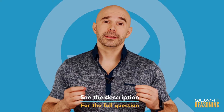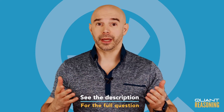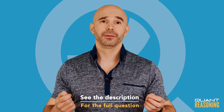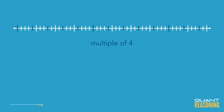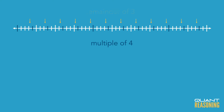For this question, I think it's useful to visualize divisibility on a number line. In this case, we're talking about divisibility by 4, so we can say that every fourth number on the number line is a multiple of 4. As we go to the right from a multiple of 4, we're going to have a remainder of 1, remainder of 2, remainder of 3, and we're back to remainder of 0 at the multiple of 4.